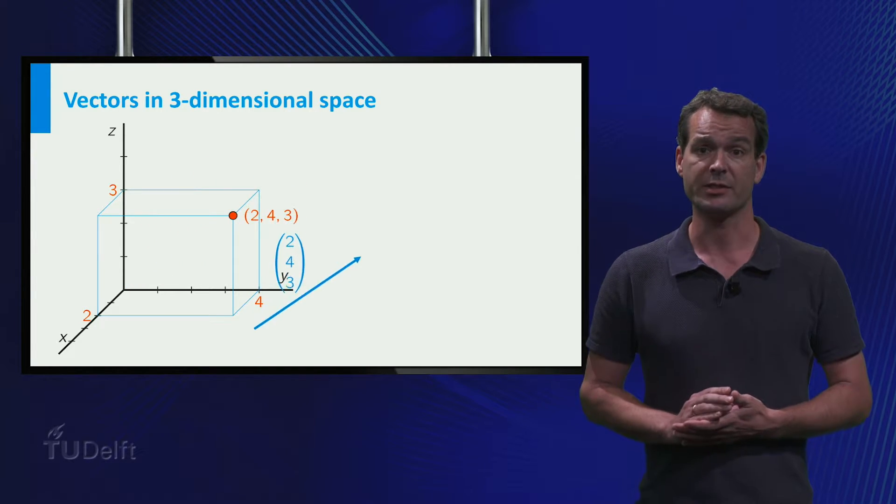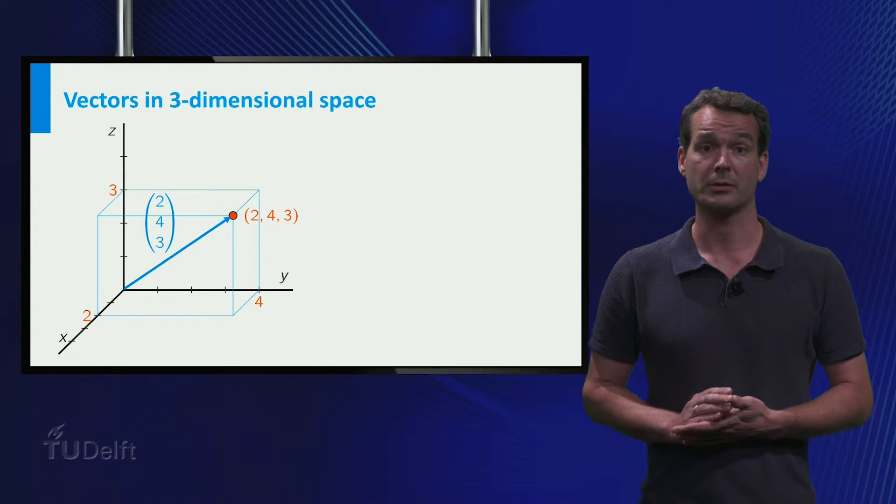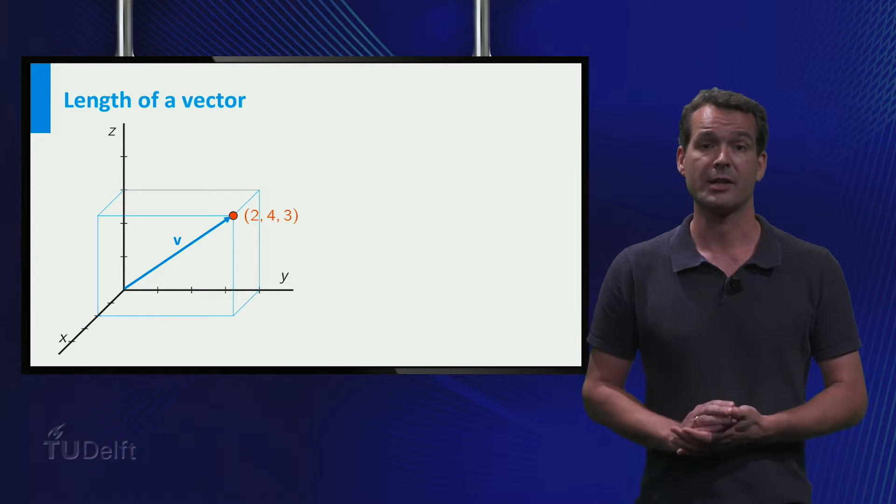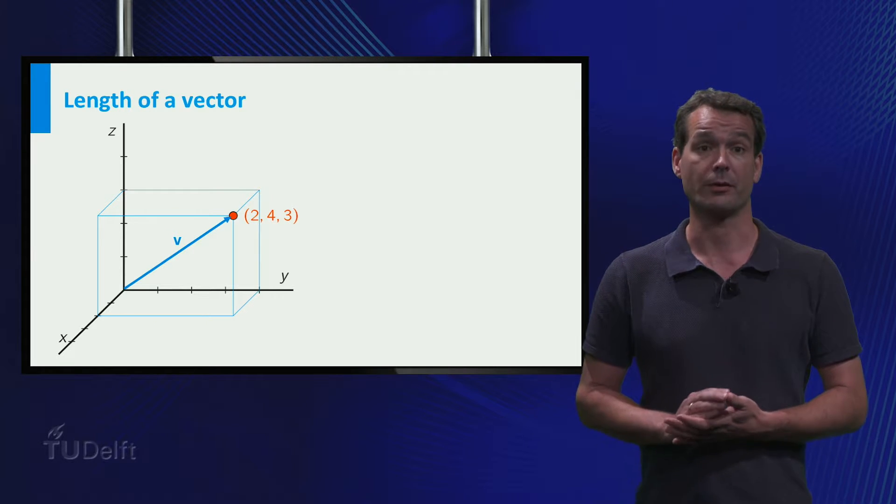Just as in two dimensions, vectors have no fixed starting point. So we can move this vector around without changing it. Let's try to calculate the norm of our vector. Remember that this is just the length of the arrow.